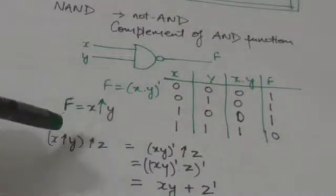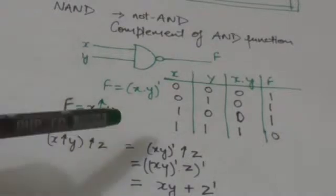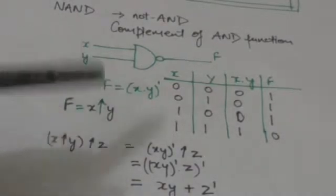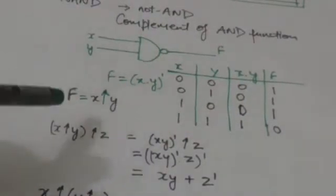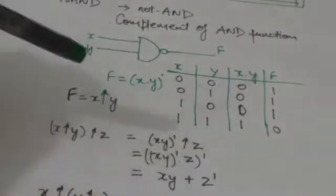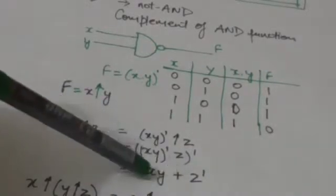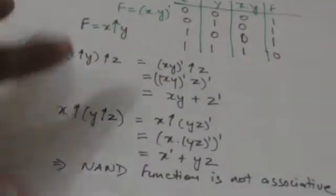First we NAND X and Y, then whatever result we get, we NAND it with binary variable Z. Here X and Y are also binary variables, so the result of X NAND Y would be the complement of X and Y. Now it has to be NANDed with binary variable Z, so it would become the complement of (complement of X·Y) and Z. By De Morgan's theorem it would become X·Y plus Z complement.